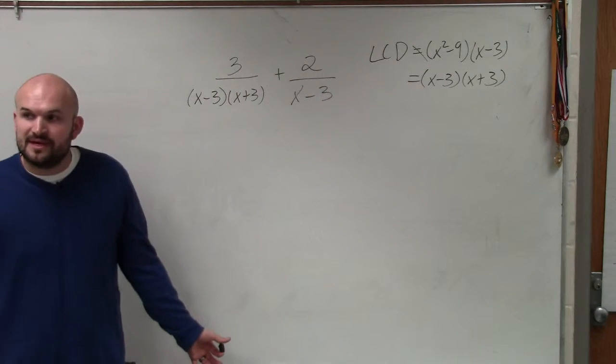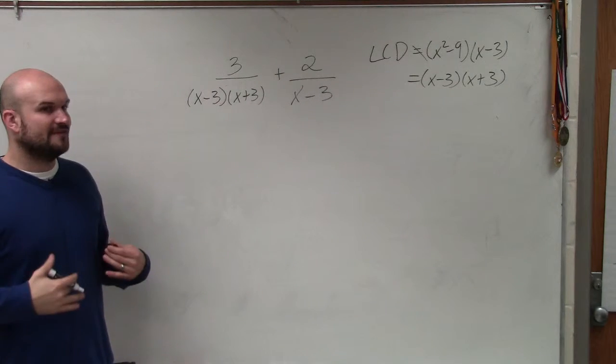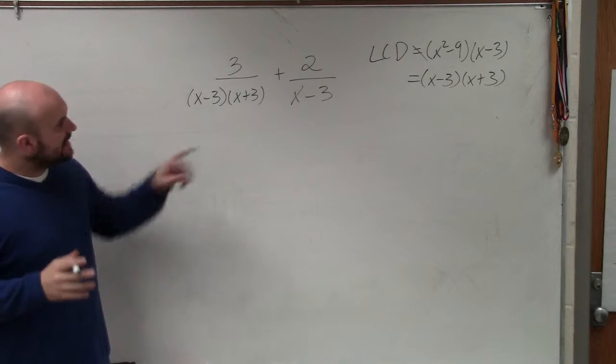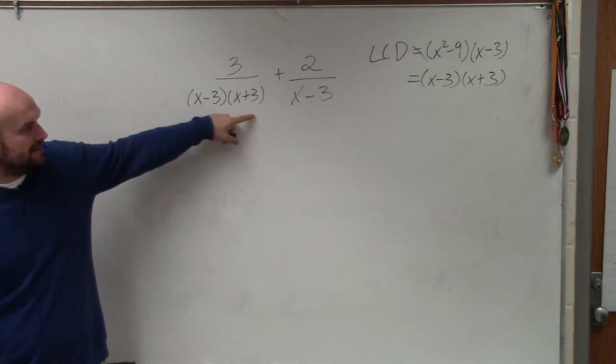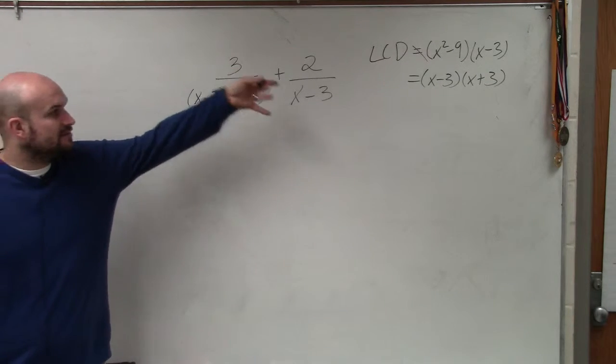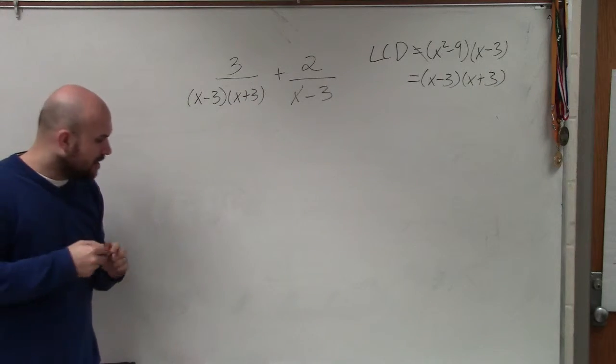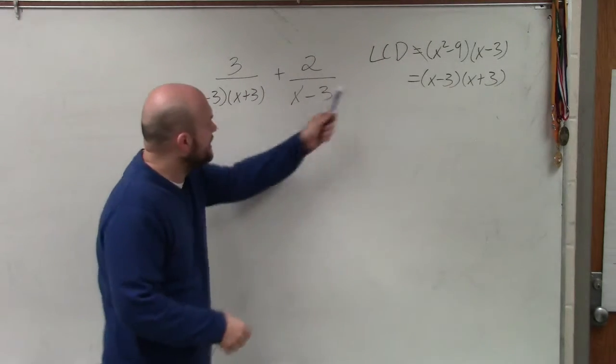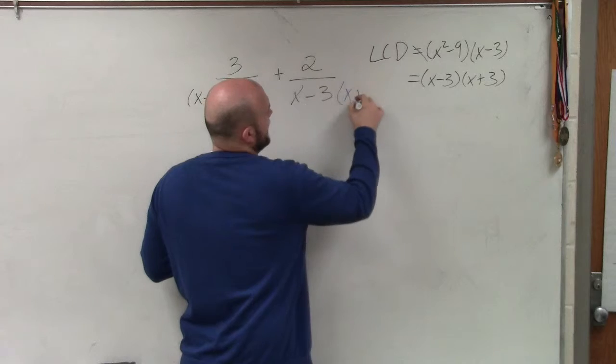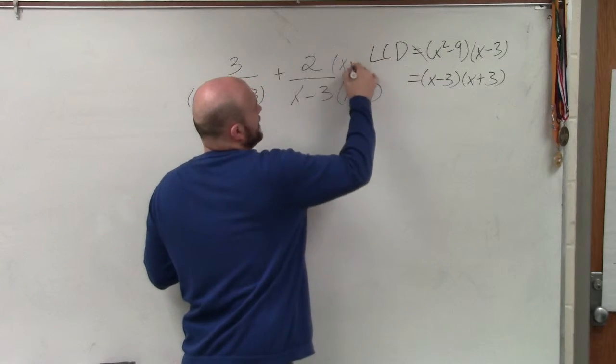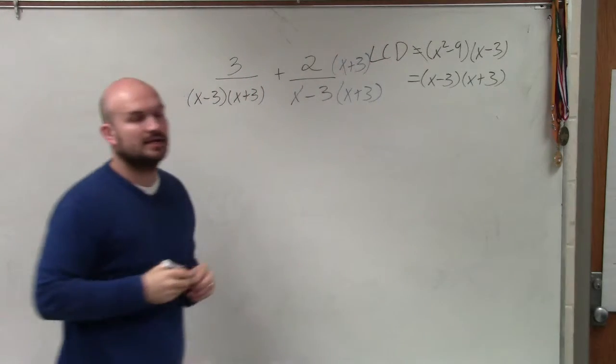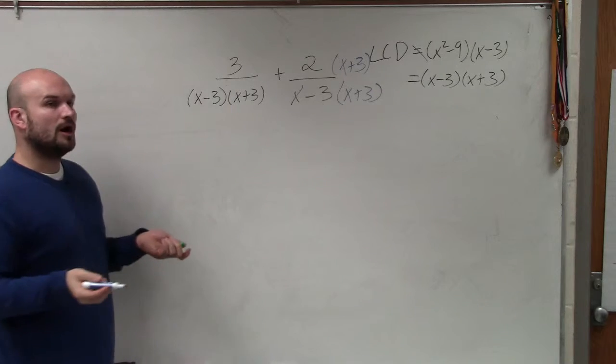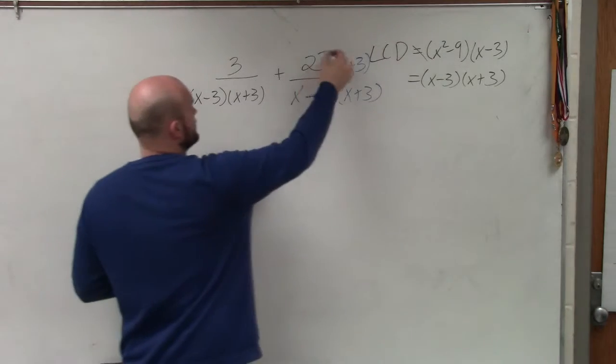And what's nice about this is since I was able to identify that, we can see that this is already at my common denominator. So therefore, to get them both to have the least common denominator, all I need to do is multiply this fraction by x plus 3. And whatever you multiply in the denominator, you have to multiply in the numerator. Now, all I simply need to do is apply distributive property.